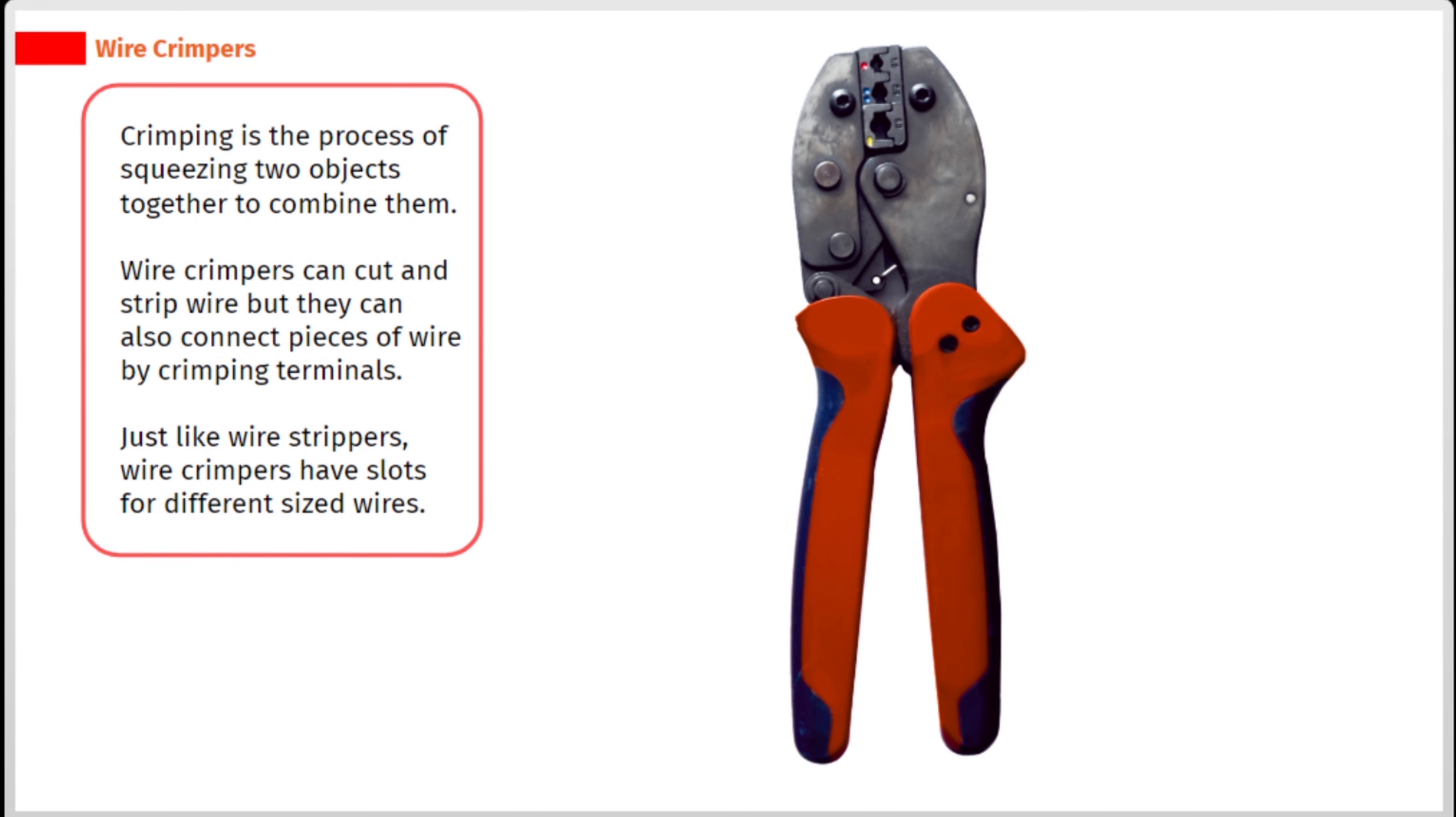Crimping is the process of squeezing two objects together to combine them. Wire crimpers can cut and strip wire, but they can also connect pieces of wire by crimping terminals.